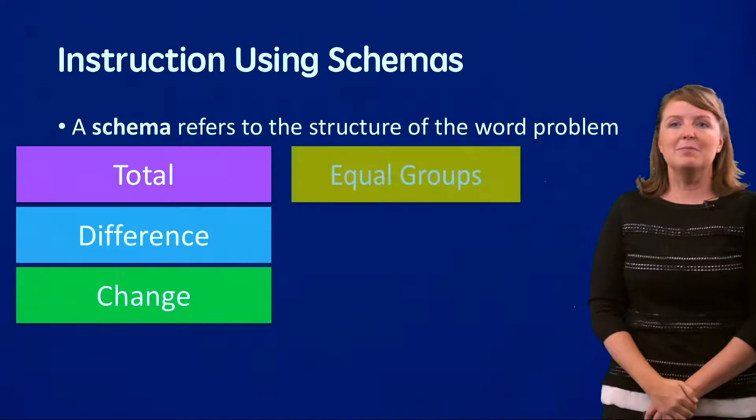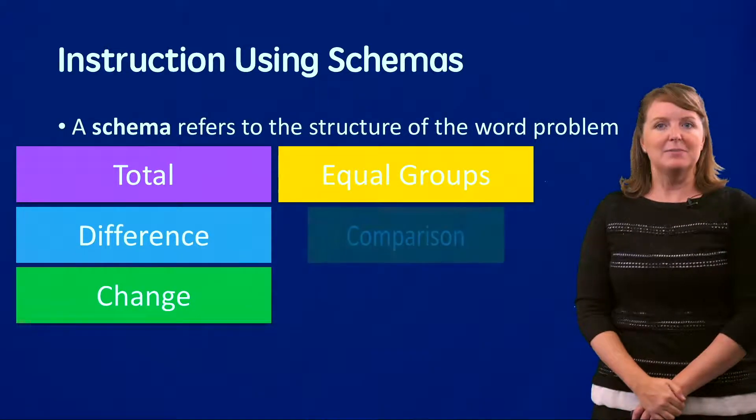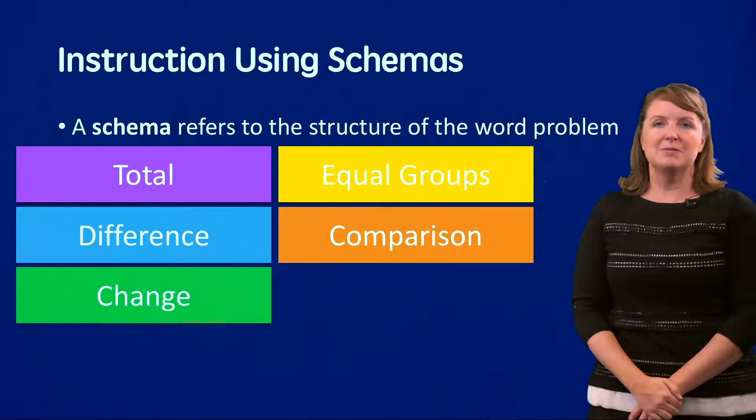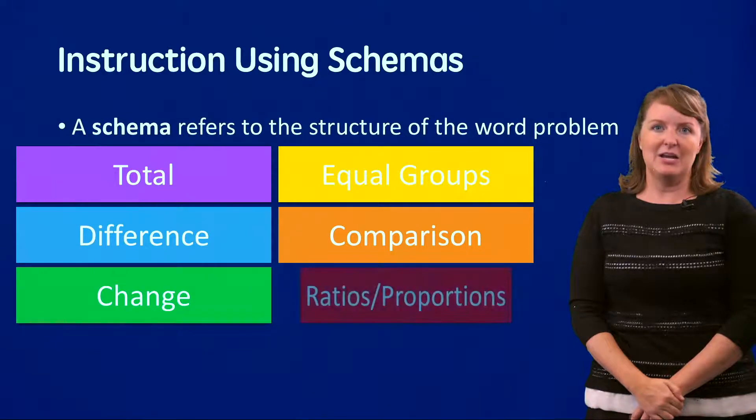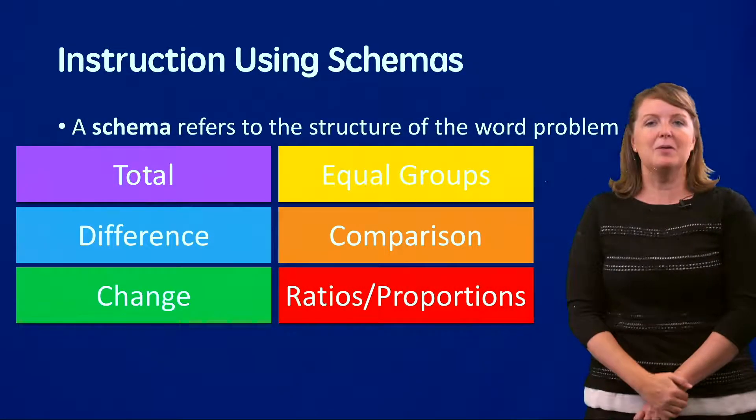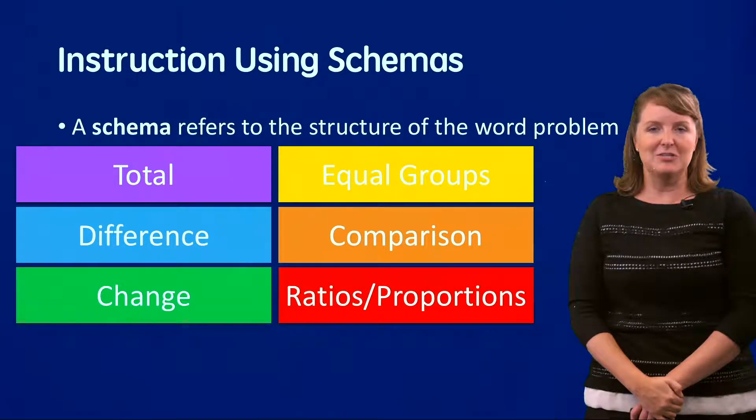And then we have three multiplicative schemas: equal groups, comparison, and ratios and proportions. We'll talk about those in other Stair Tailoreds. But right now, we're going to focus on the total schema.